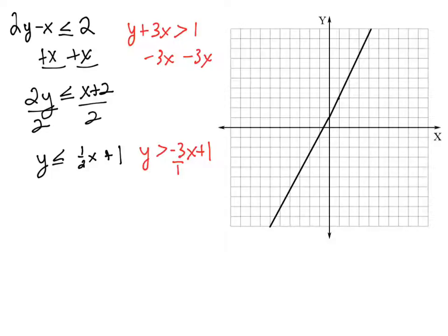So, and what we need to do is we need to make this a dashed line. So we will have a solid line any time the inequality is less than or equal to or greater than or equal to. We have a dashed line when we have less than or greater than.